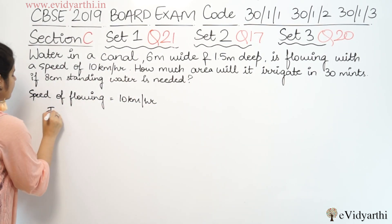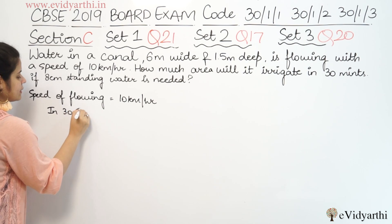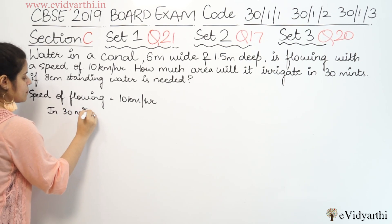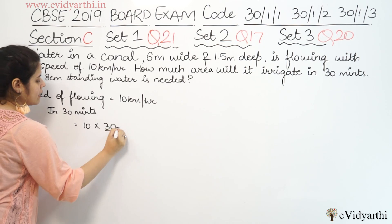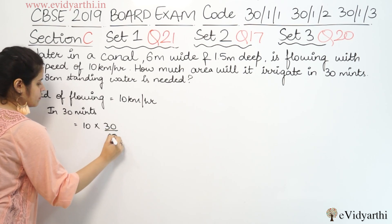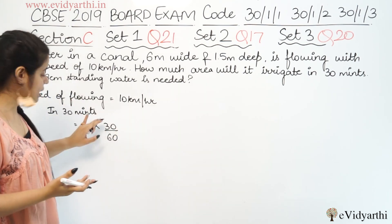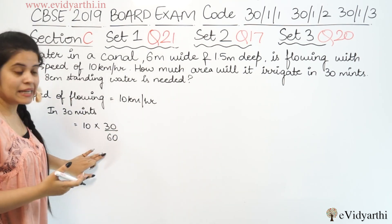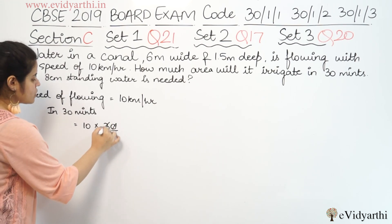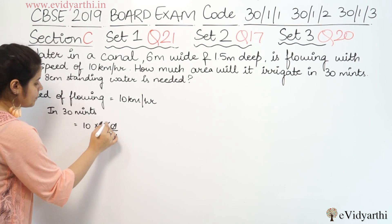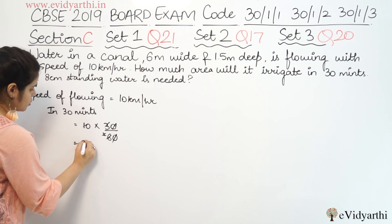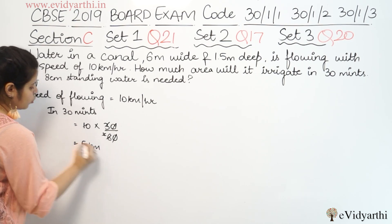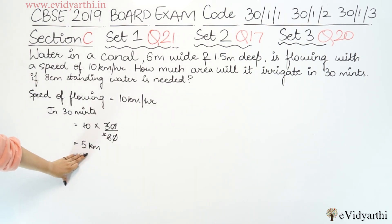So, in 30 minutes, how much distance will the water travel? 10 km/hr × (30/60) hours. 30 upon 60 simplifies: this will cancel to give 5 km. So in 30 minutes, the water travels 5 km.